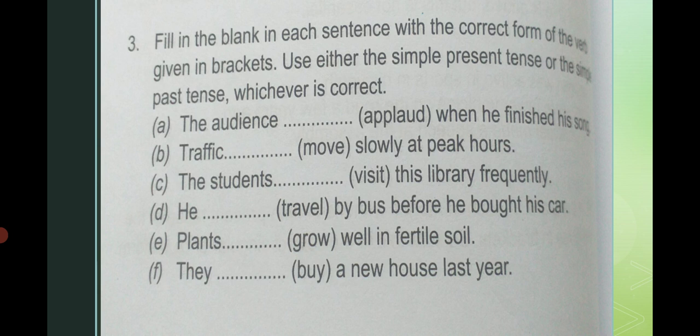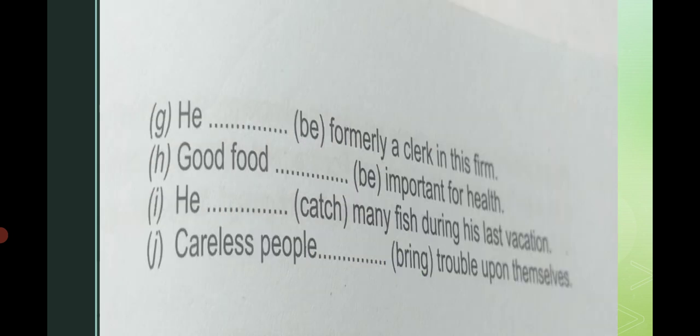'Plants dash well in fertile soil' — this is present tense, plants is plural: 'Plants grow well in fertile soil.' 'They dash a new house last year' — last year refers to past: 'They bought a new house last year', b-o-u-g-h-t. 'He dashed formerly a clerk in this firm' — past tense, singular subject: 'He was formerly a clerk in this firm.' 'Good food dash important for health' — present tense, singular: 'Good food is important for health.'